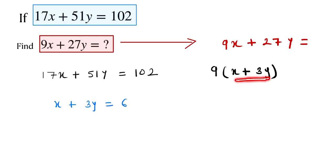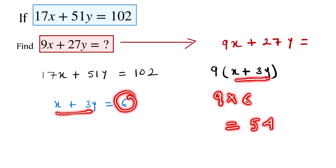We already found the value of x plus 3y. The value of x plus 3y is equal to 6. So 9 into 6 is equal to 54. This one is our final answer.